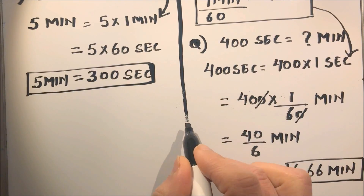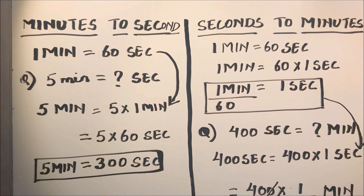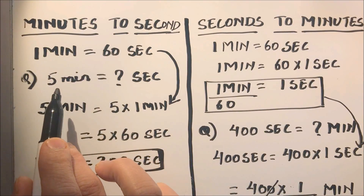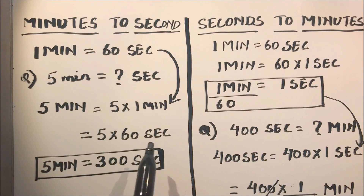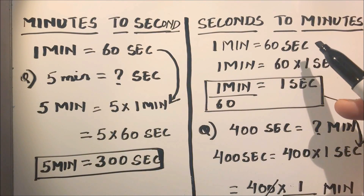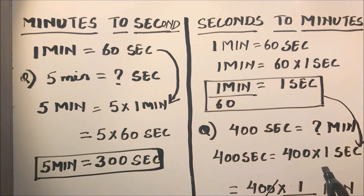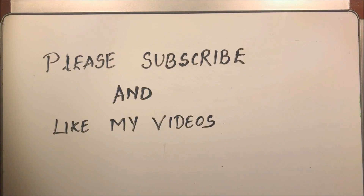This is how we can convert any minutes to seconds and seconds to minutes. Just remember: one minute is equal to 60 seconds. To convert minutes to seconds, multiply by 60. To convert seconds to minutes, use the relation one second equals one over 60 minutes. Thanks for watching — please subscribe to my channel and like my videos.